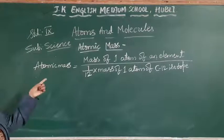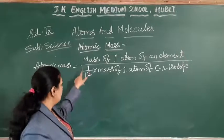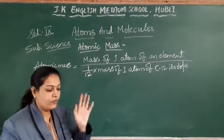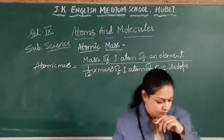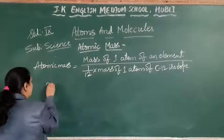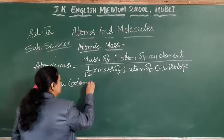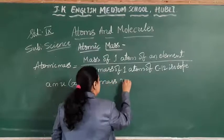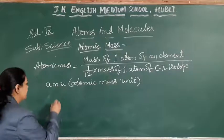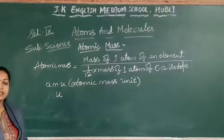So atomic mass is defined as the mass of one atom of an element divided by 1/12 the mass of one atom of the carbon-12 isotope. With this we can identify the atomic mass. What is the unit for atomic mass? The unit is atomic mass unit — A, M, U — and it is also represented simply as U.